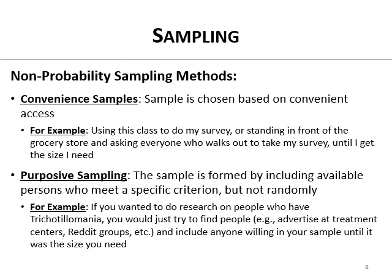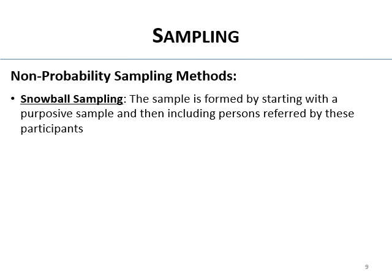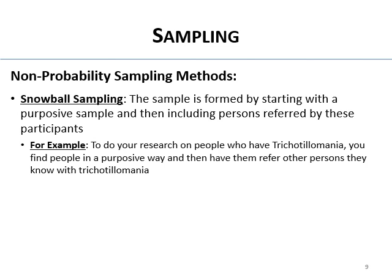Snowball sampling is also used when you're studying something that's hard to find people for. The sample is formed by starting with a purposive sample — finding people who have the condition of interest — and then including persons referred by those participants. For example, if you're studying people who've been in federal prison, you purposively find some and then ask them to forward the survey to others they know. If you're studying trichotillomania, you find people purposively and have them refer others they know with the condition. That's snowball sampling.